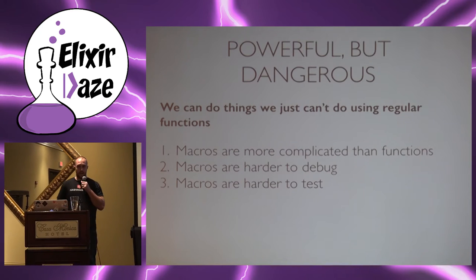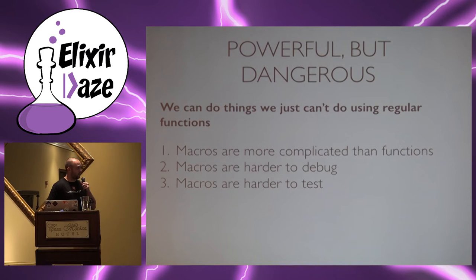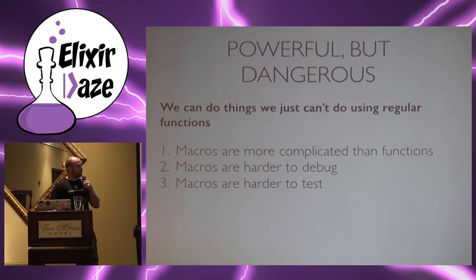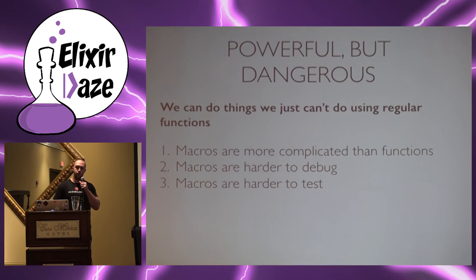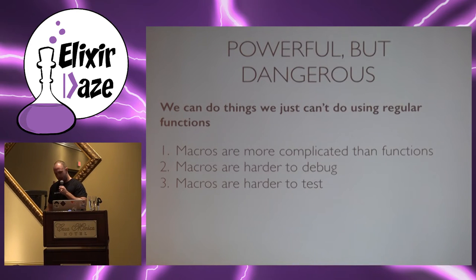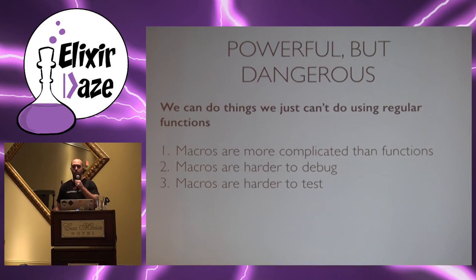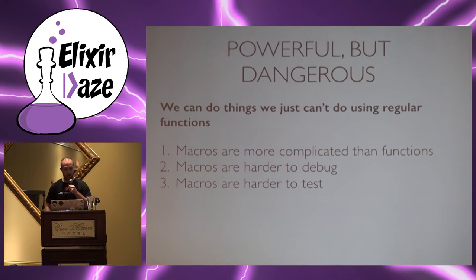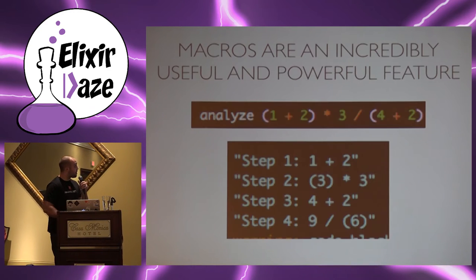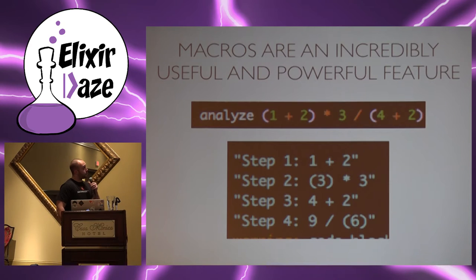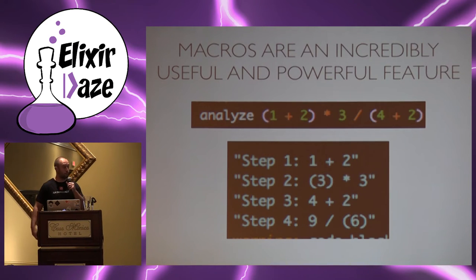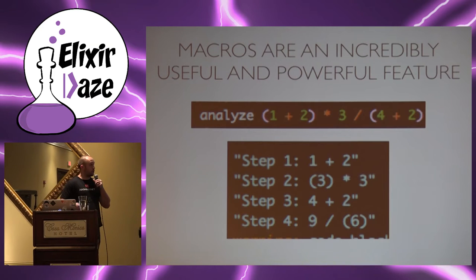Also, kind of a fourth point — I know everybody gets sick of talking about Ruby at an Elixir conference, but I do Ruby nine to five. And the absolute worst problems I've ever had to solve were when people were metaprogramming unnecessarily. That's a lot of my motivation for this talk, because I don't want that to seep over into the Elixir community. With that said, macros are an incredibly useful and powerful feature, and you should not be discouraged from using them when it actually applies.